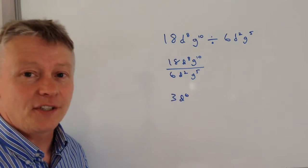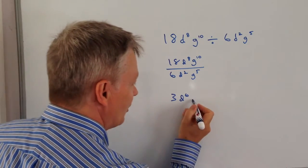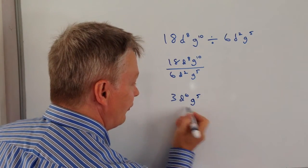And then finally I've got g to the 10 divided by g to the 5. Again we subtract those so that becomes g to the 5.